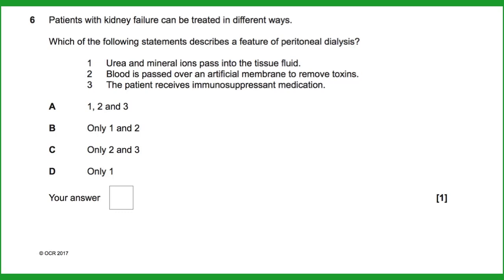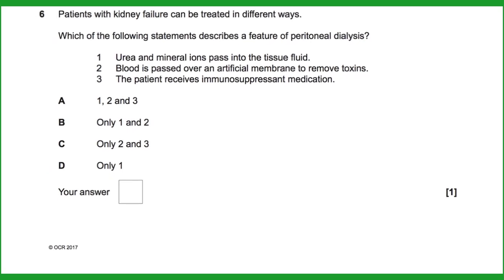Question six: which statement describes a feature of peritoneal dialysis? In peritoneal dialysis, dialyzing fluid is placed in the abdominal cavity and the peritoneum — the membrane covering the intestines — acts as the dialyzing membrane. Urea and mineral ions pass from blood across the peritoneum into the fluid. Blood passing over an artificial membrane is haemodialysis, and immunosuppressants relate to kidney transplants. The correct answer is D.